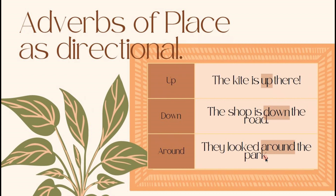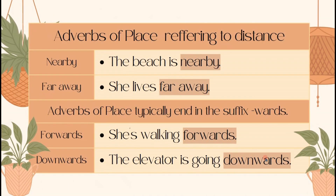It is indicating the direction of the kite. 'The shop is down the road' — here the shop is our object, and 'down' is indicating the direction of the shop. Lastly, 'they looked around the park.' Now, here we have adverbs of place referring to distance.